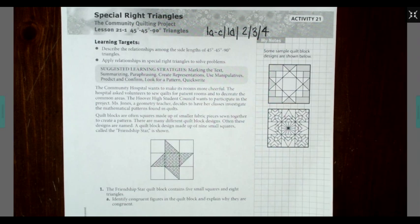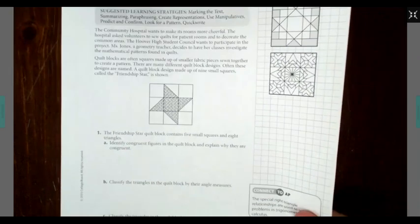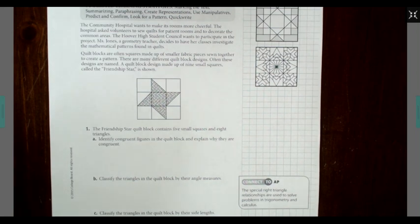Let's go ahead and take a look at the introduction for 1A through C. It says the community hospital wants to make its rooms more cheerful. The hospital asks volunteers to sew quilts for patient rooms and to decorate the common areas. The Hoover High Student Council wants to participate in the project.